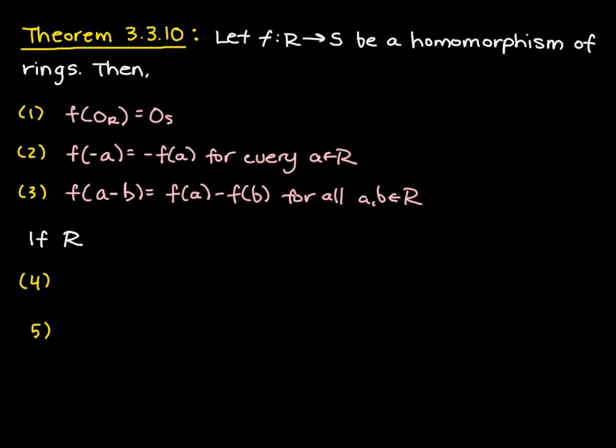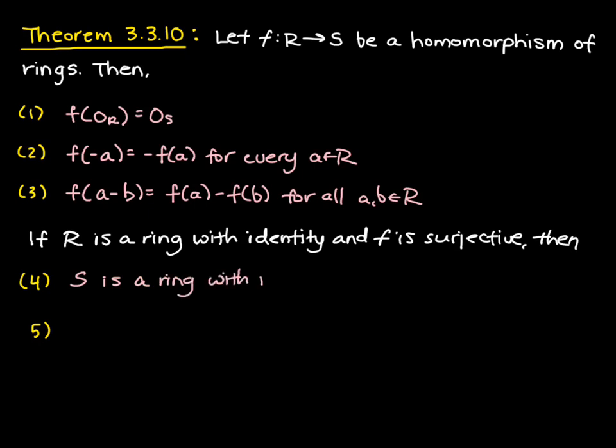So if we have the further condition that if R is a ring with identity and f is surjective, then we also get the following conditions are satisfied. The first is that S is a ring with identity. So we have a homomorphism between two rings R and S, and if we assume that R is a ring with identity and f is surjective, then that tells us that not only does S have an identity, but that identity is the image of the identity in R under f.